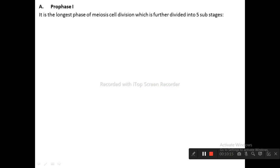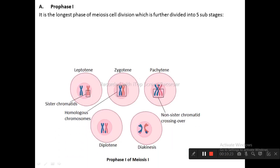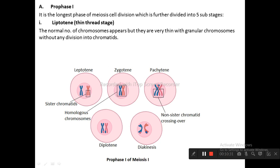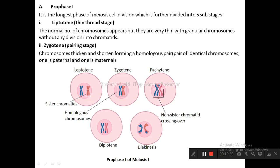The stages of meiotic first are discussed below. Prophase 1 is the longest phase of meiosis cell division and is further divided into five sub-stages: leptotene, zygotene, pachytene, diplotene, and diakinesis. Leptotene, also known as the thin thread stage: the normal number of chromosomes appears but they are very thin with granular chromosomes without any division into chromatids. Zygotene, also known as the pairing stage: chromosomes condense and shorten, forming homologous pairs — one paternal and one maternal.